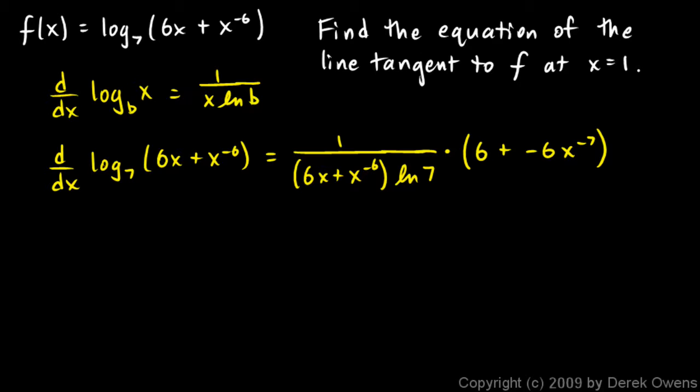Now we're told to find the equation of the tangent line at x equals 1, so we need to find the derivative at x equals 1. f prime of x is what we just found here, so we need to find f prime of 1. And we get that by plugging in a 1 for the variable x in all of those places.